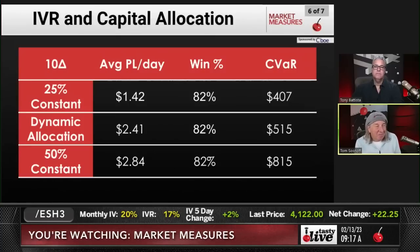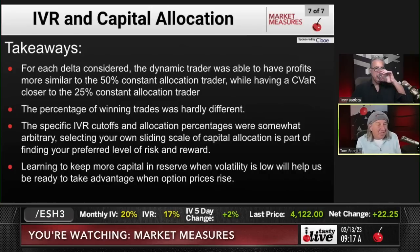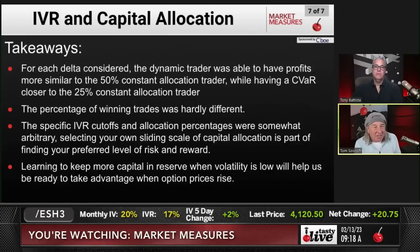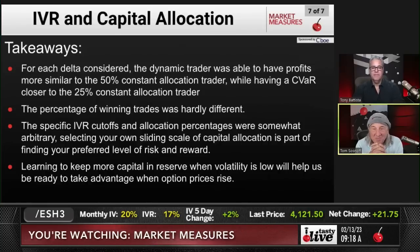For each delta considered, the dynamic trader was able to have profits more similar to the 50% consistent allocation while having a C-VAR close to the 25%. Dynamic seemed to make the most sense: lower C-VAR, closer to higher profits, and the winning percentage of the trades was hardly different on any of them. The specific IVR cutoffs and allocation percentages were somewhat arbitrary — selecting your own sliding scale of capital allocation is part of finding a preferred level of risk. Learning to keep more capital in reserve when volatility is low will help us be ready to take advantage when option prices rise.